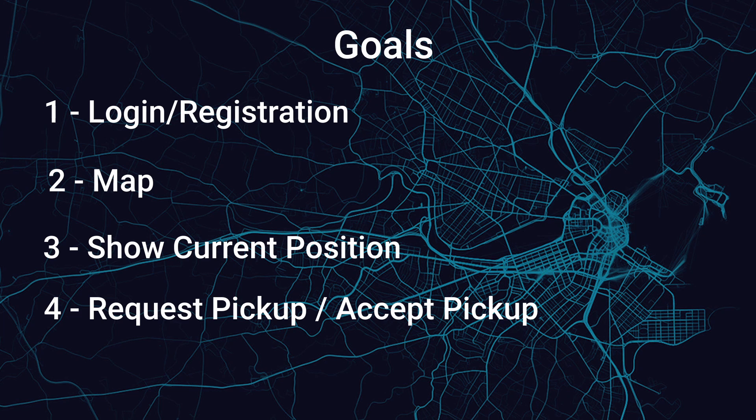After all that is done, we'll get to the main parts of the series: requesting a pickup for the customer, and giving the Uber driver the opportunity to either accept or decline it. If the driver accepts, we are going to show the distance from the driver to the customer, and show the driver's updated location to the customer and vice versa.